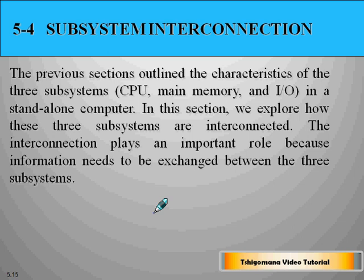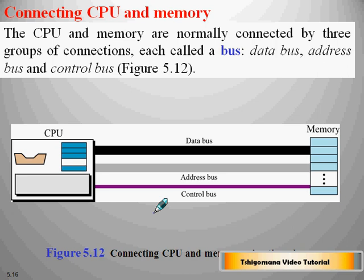The CPU and memory are connected by three groups of connections, each called a bus: the data bus, the address bus, and the control bus. These subsystem interconnections play an important role because information needs to be exchanged between the three subsystems.